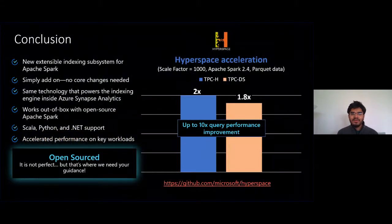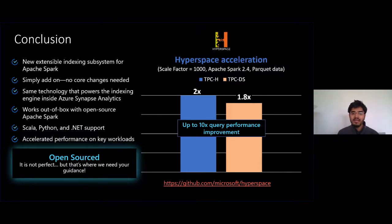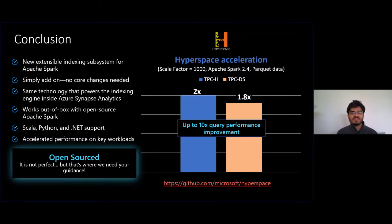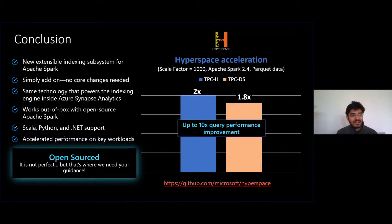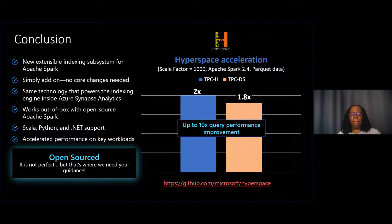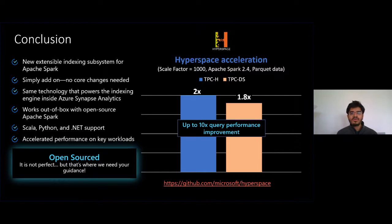Let's recap. Today we talked about Hyperspace: it's an extensible indexing subsystem for Apache Spark. It's a simple add-on — no changes needed to Apache Spark to get it working. It works out of the box with open source Apache Spark and supports three languages: Scala, Python, and .NET. In our initial evaluations it showed accelerated performance on standard industry workloads. We did open source the code base — it's not perfect, but that's where we need your guidance. The new Synapse went GA as of last week, announced by Satya, and Hyperspace is available out of the box right there.